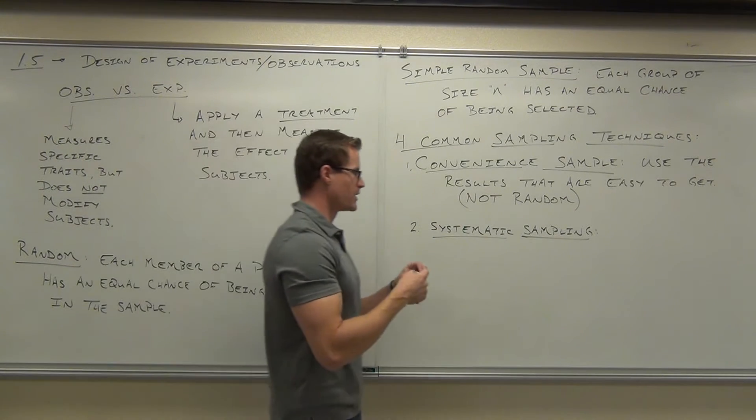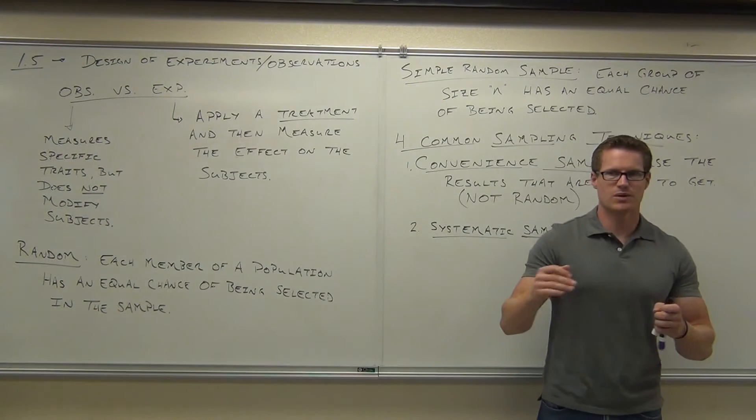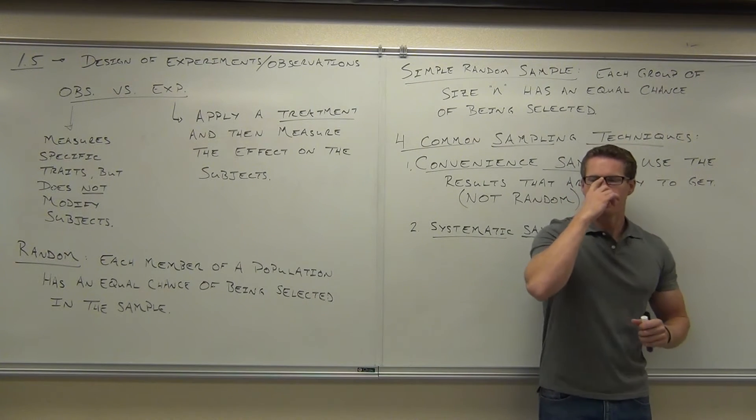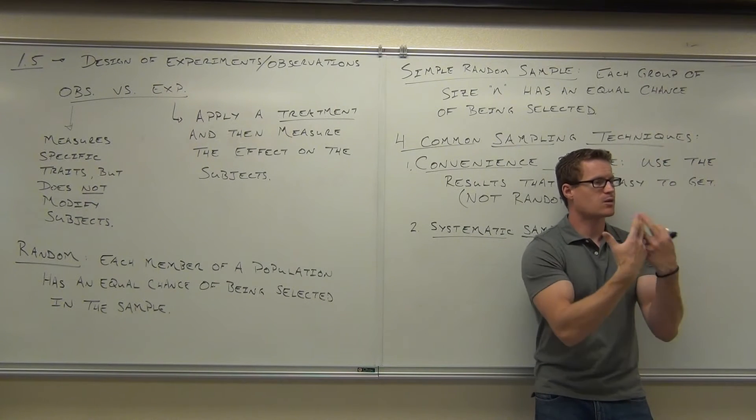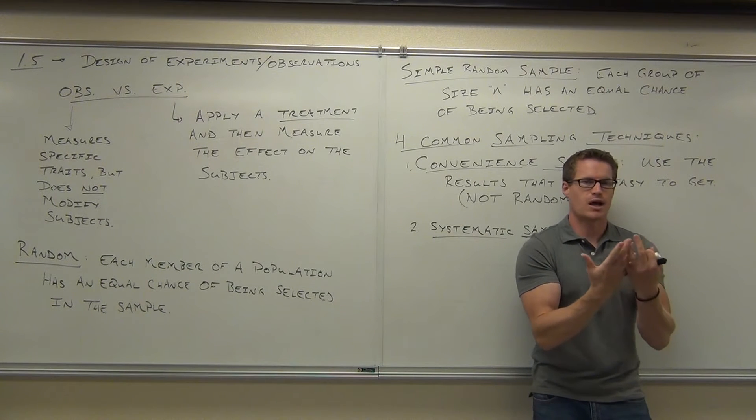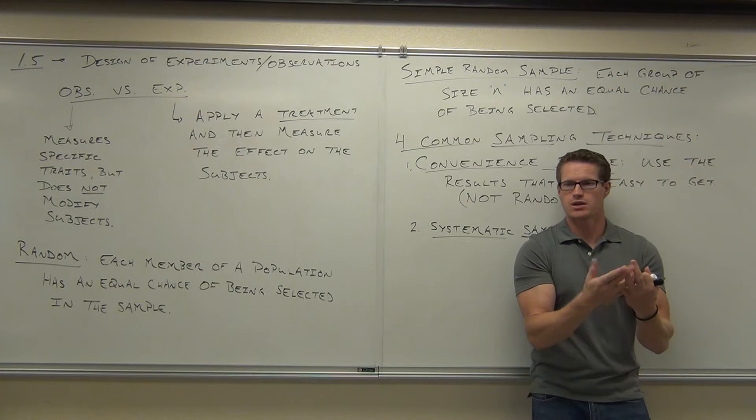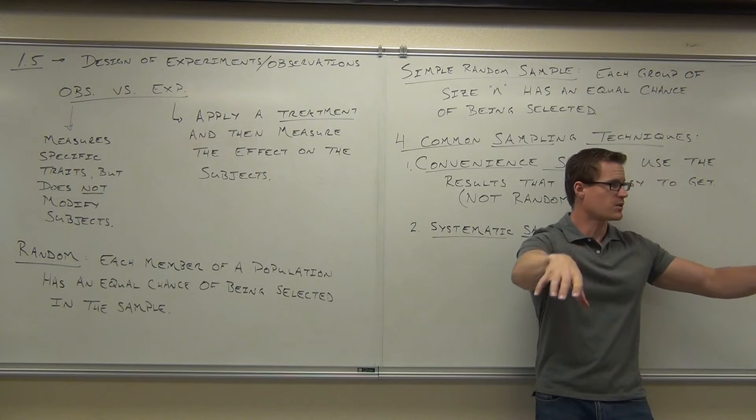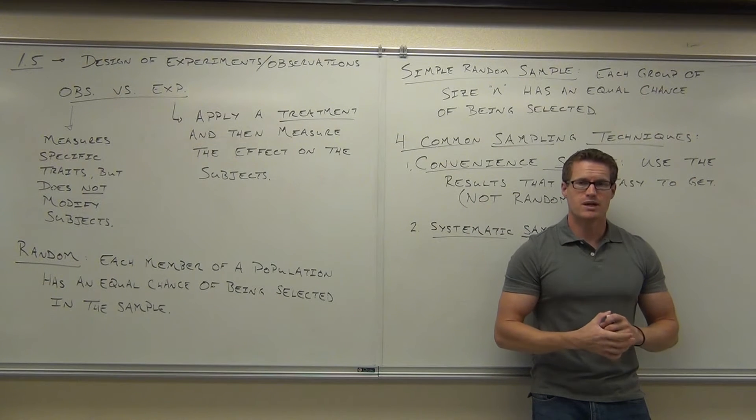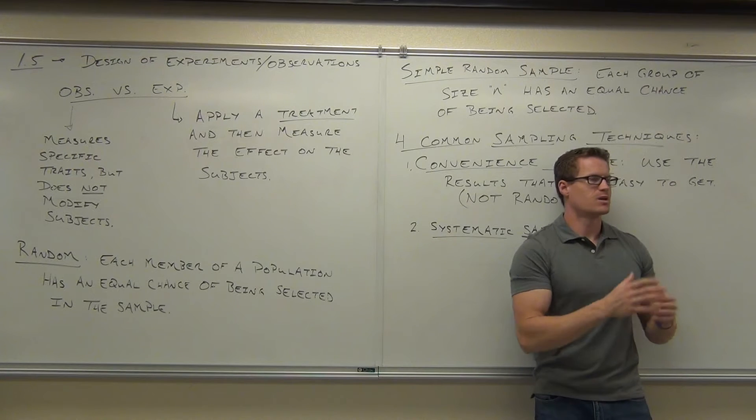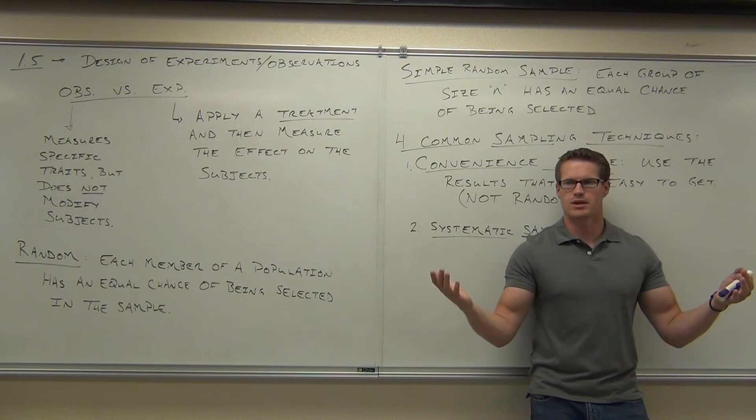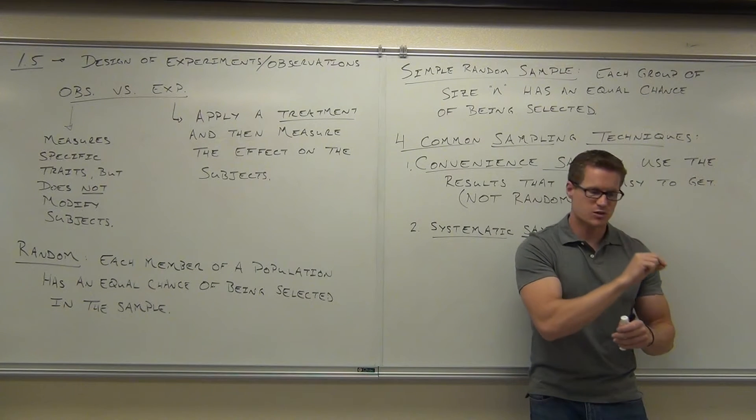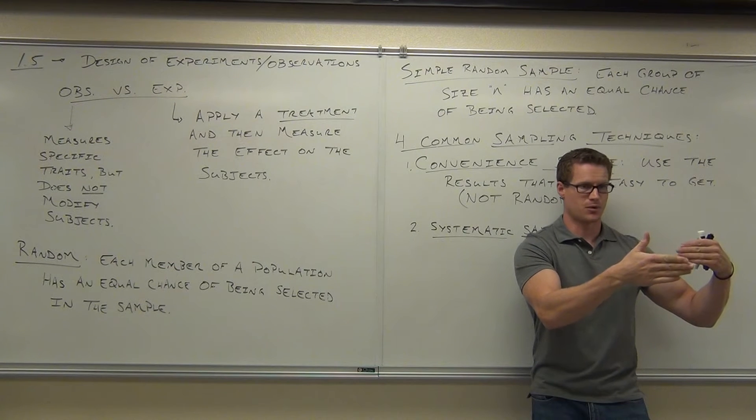Here's how systematic sampling works. Systematic means you're doing things in a certain order. Here's what you would do for systematic. You would take your entire population, and you would assign every person a number. So you'd say, you're number one, and you're number two, you're number three, four, five. And every single person in, if this was our population, would get a number. Then what you do is you pick like a random number, like one through five, or one through six, depending on how large your population is, one through a hundred if it's really, really big.